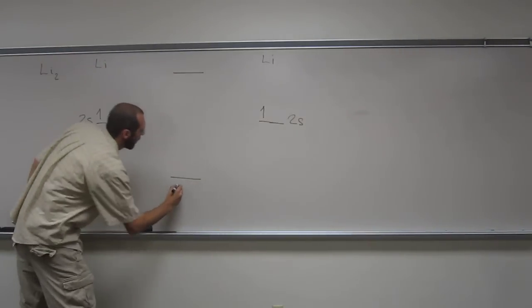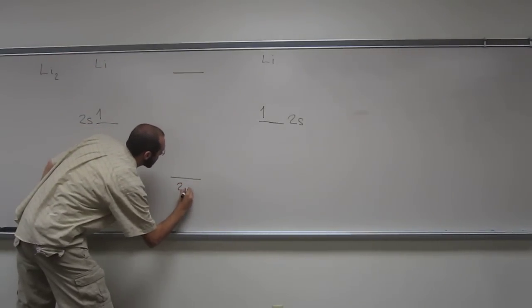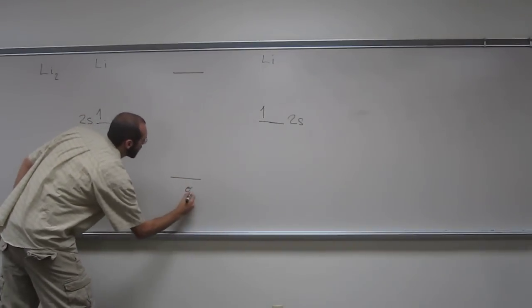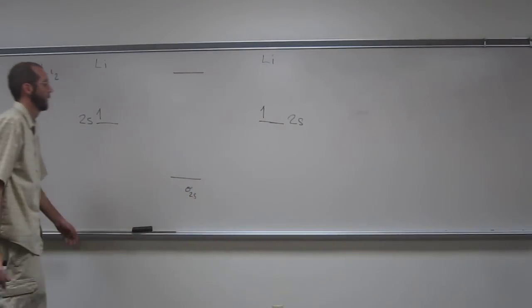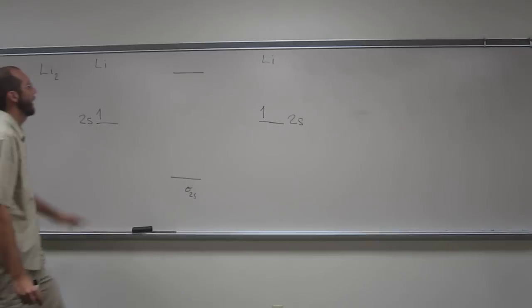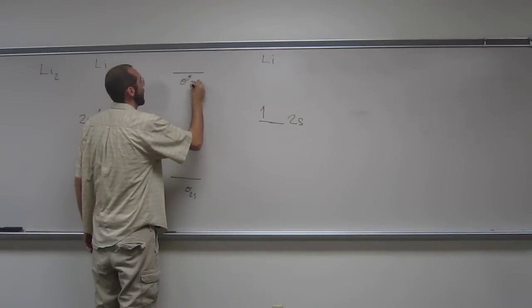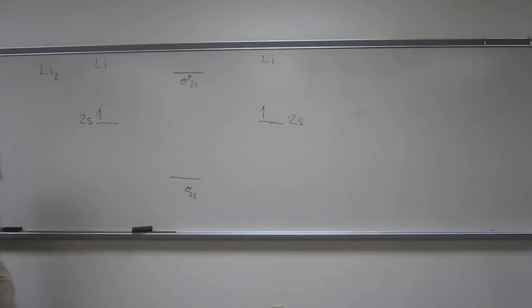So down here, we're going to have the sigma 2s bonding orbital. And up here, we're going to have the sigma star 2s anti-bonding orbital.